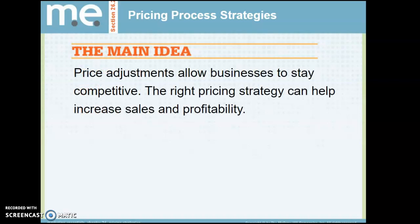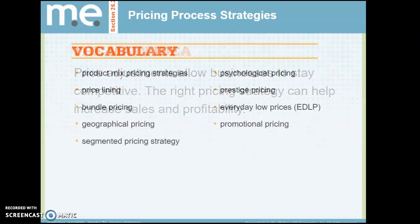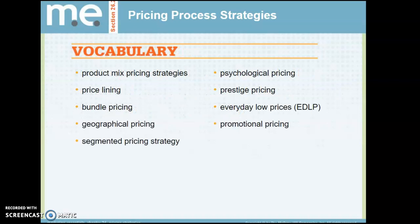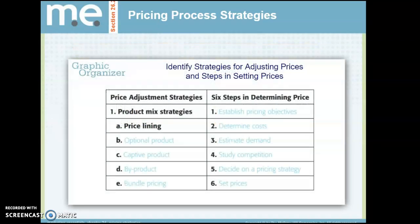Price adjustments allow businesses to stay competitive, and the right pricing strategy can help increase sales and profitability. Here are the six steps in determining price: establish your objectives, determine your cost, estimate your demand, study the competition, decide on what type of strategy you want to use, and then actually set your prices.